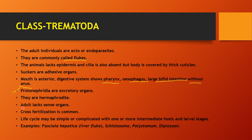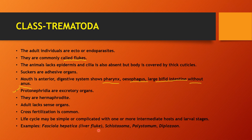Cross-fertilization is common. The life cycle is simple or complicated. Simple means one host shows the entire life cycle; complicated means the organism passes through larval stages in multiple hosts. Examples include Fasciola hepatica — the liver fluke — and Polystomum and Diplozoon. These are examples of Class Trematoda.